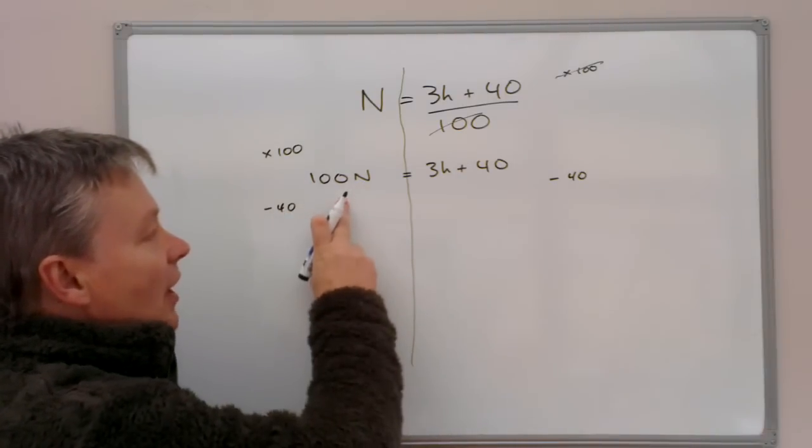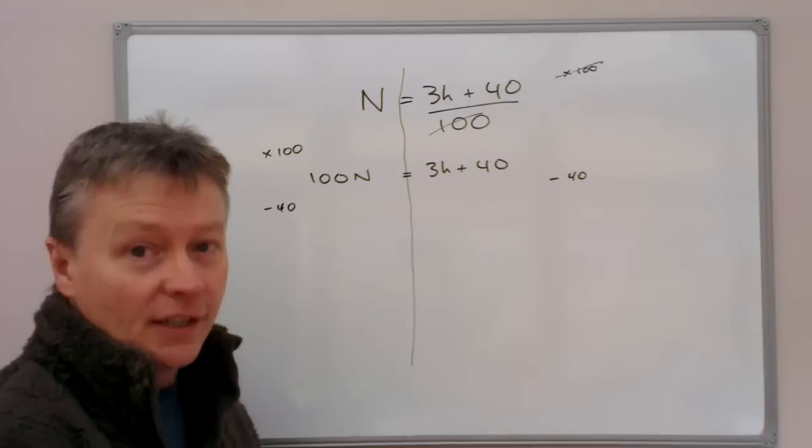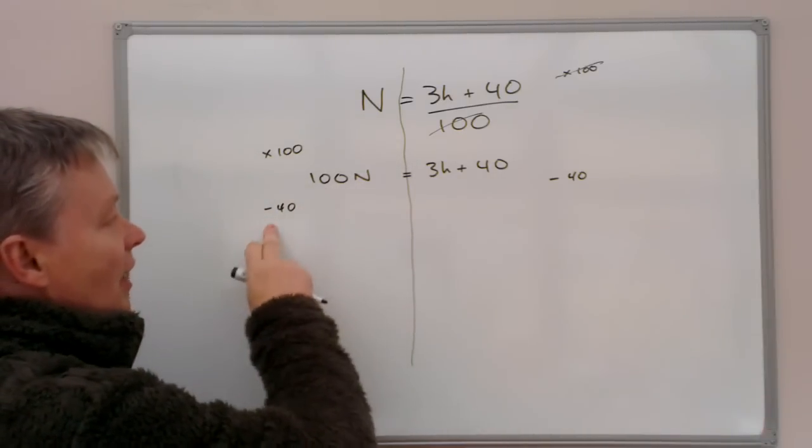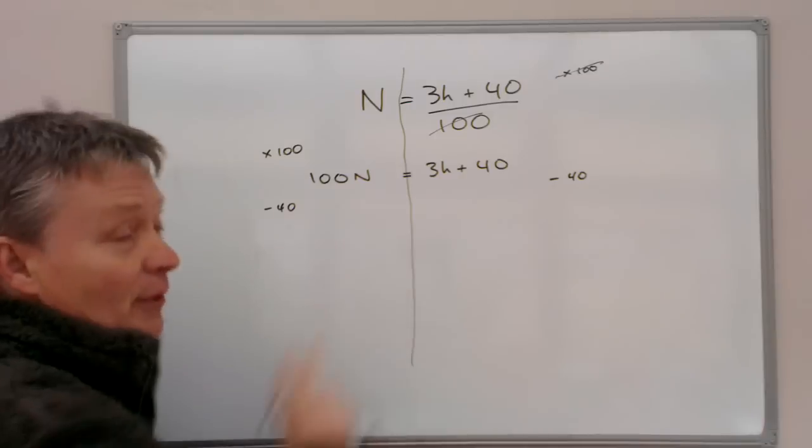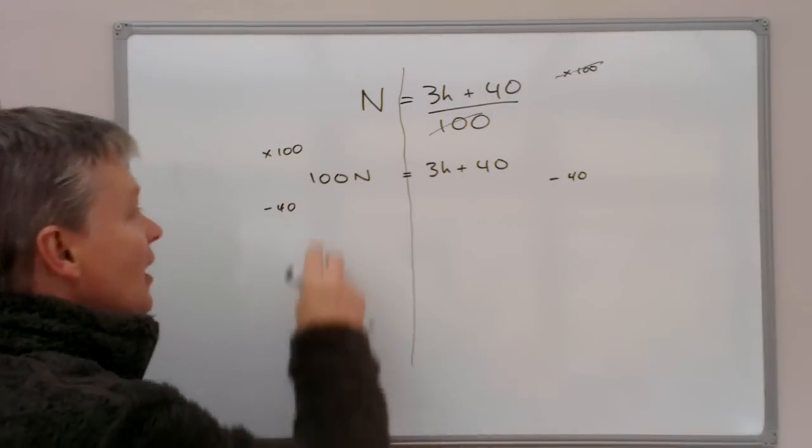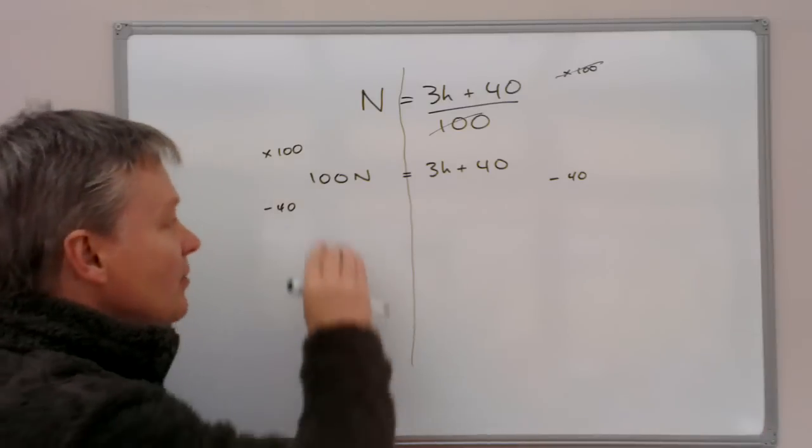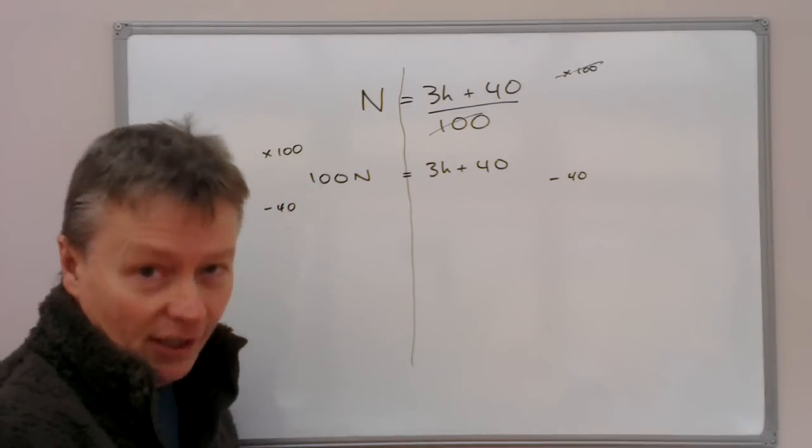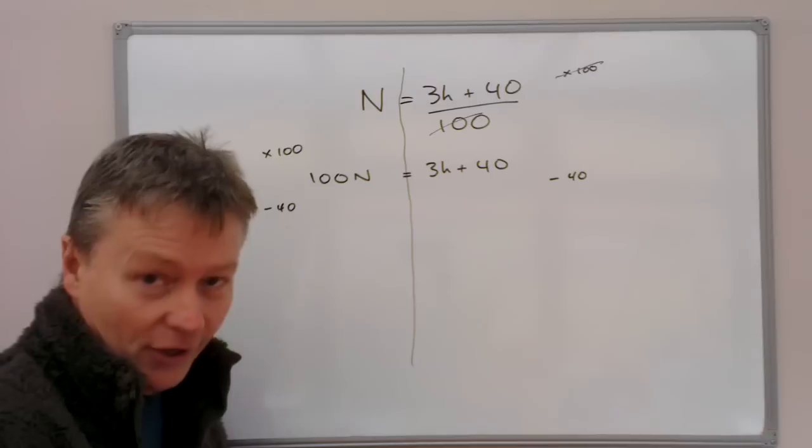So with this side, I have 100N take away 40. Now it's not 100 take away 40, which would give me 60N. Because you have to treat these as completely separate terms. 100N is entirely different to the number 100.